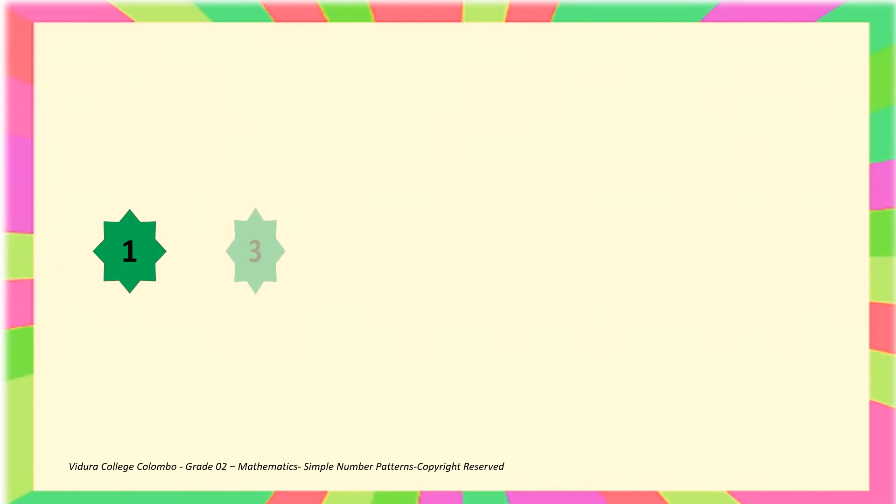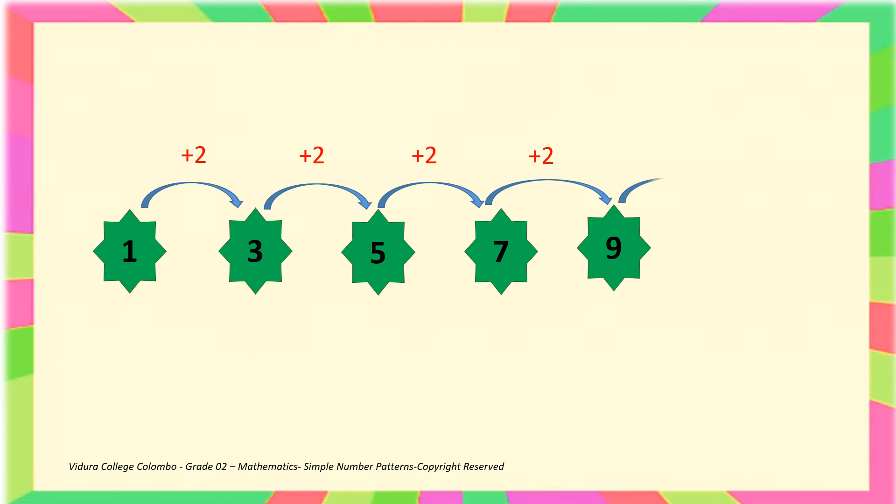Fourth example. 1, 3. The gap in between two numbers is 2. 3 plus 2 is 5. 5 plus 2 is 7. 7 plus 2 is 9. 9 plus 2 is 11. The gap is shown in red color. The gap in between two numbers is 2.